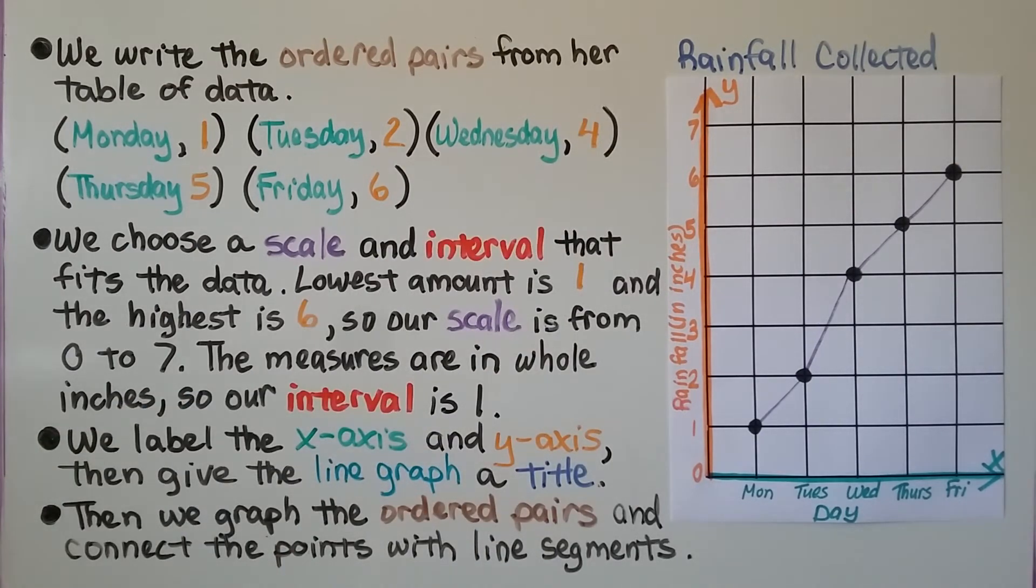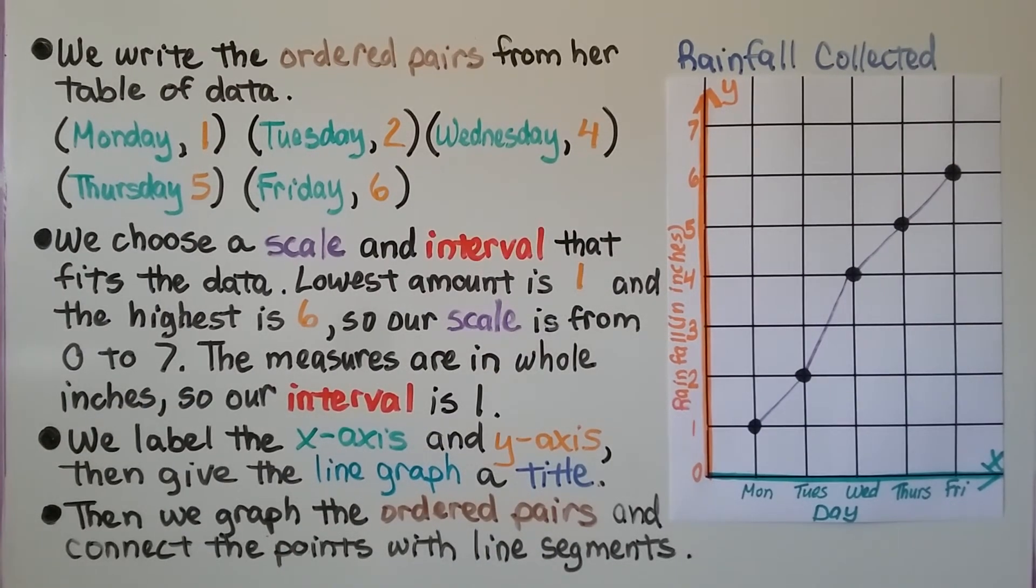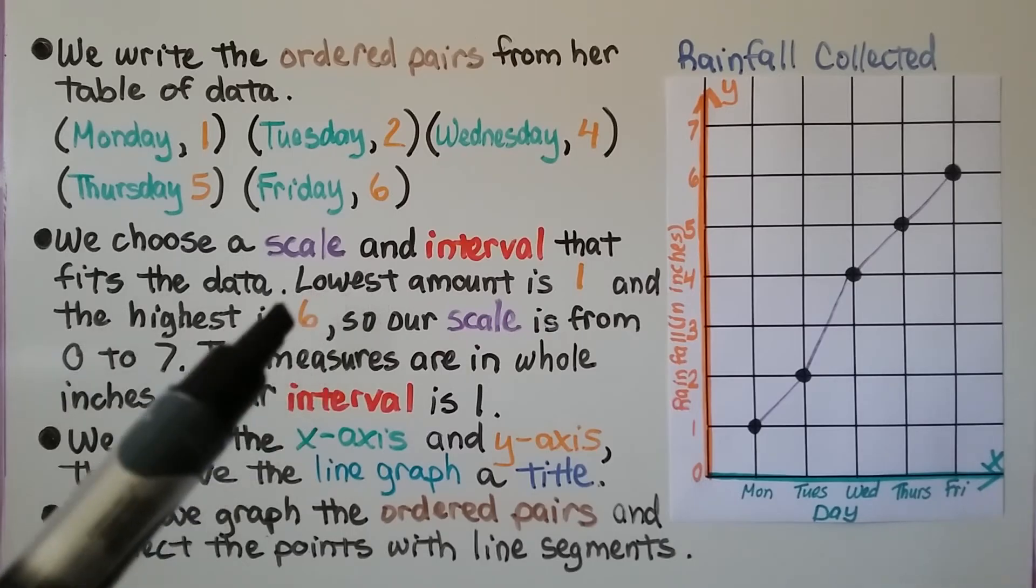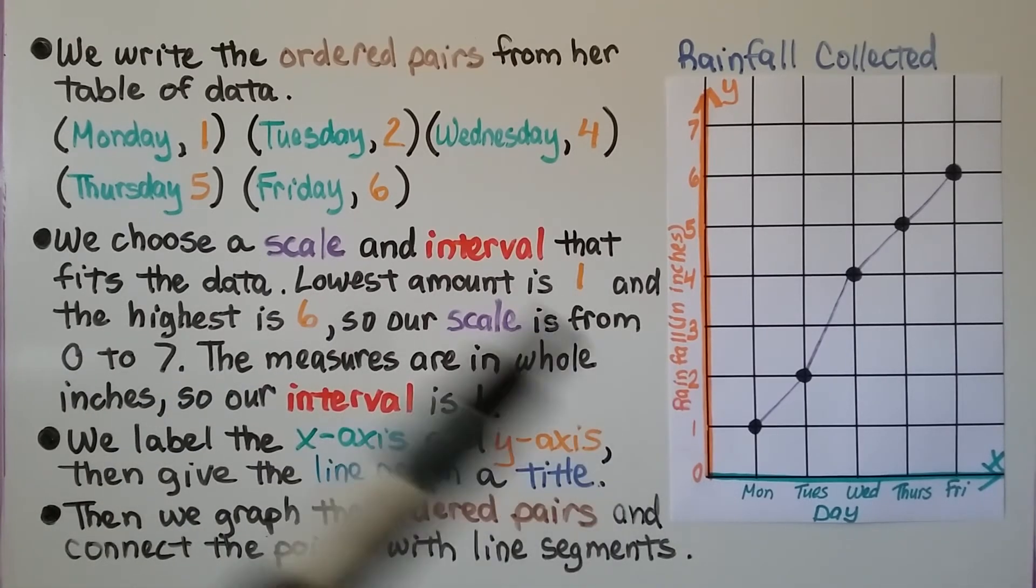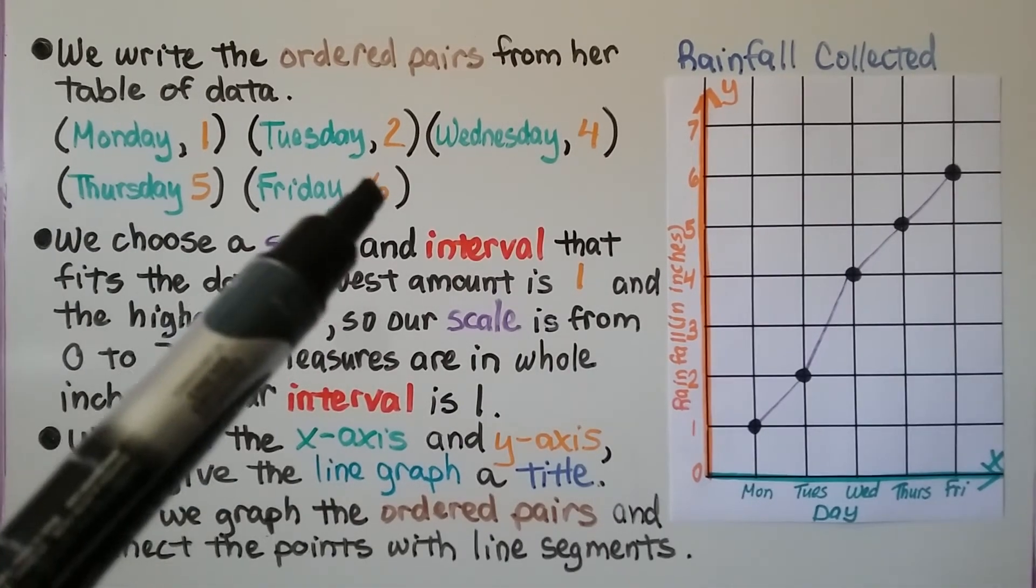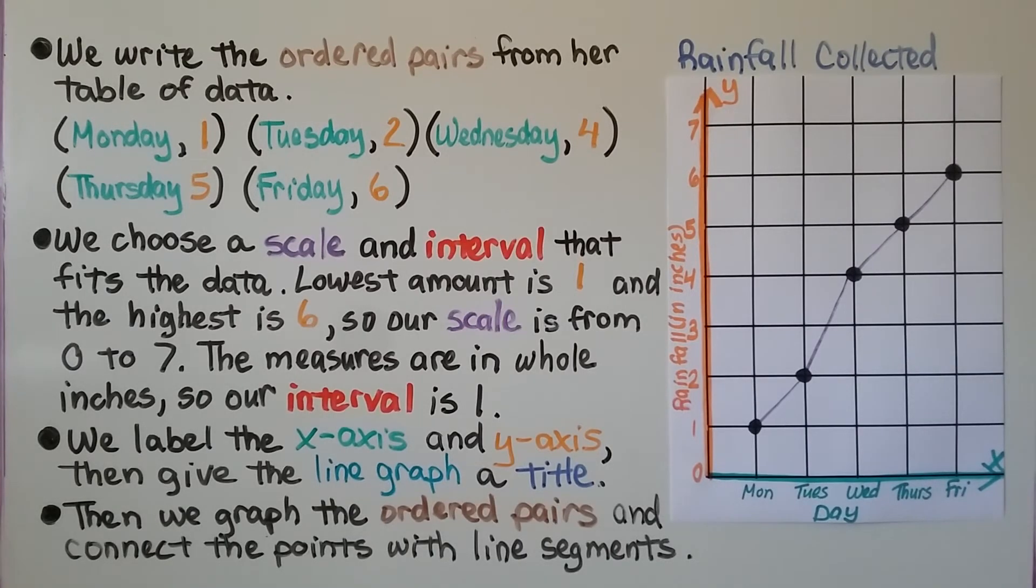...one, two, three, four, five, six, seven. And we'll have, because the lowest amount is one, and the highest is six, our scale is from zero to seven. And the measures are in whole inches, so our interval is one. There's one inch between each of the numbers on the scale.